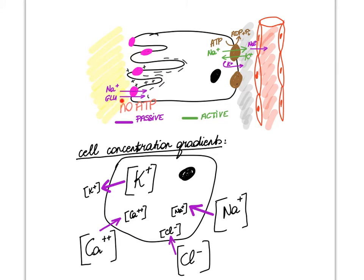Glucose is an example of a substance that takes advantage of secondary active transport of sodium. The same protein that allows sodium to diffuse into the cell at the luminal membrane also allows glucose to bind and tag along. This is how many solutes in the filtrate manage to make it into our cell and then into the blood — sometimes against their concentration gradient.